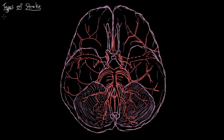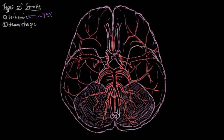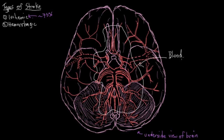There are two main types of stroke. Ischemic strokes, where brain tissue dies because it's not getting enough blood and therefore not enough oxygen to stay alive — often caused by some type of obstruction of a blood vessel. And hemorrhagic strokes, where a blood vessel in the brain bursts. In this video we'll look at ischemic strokes, which make up about 75% of all strokes. This is an underside view of the brain so you can get a good look at the blood vessels that originate underneath the brain and supply it with blood.